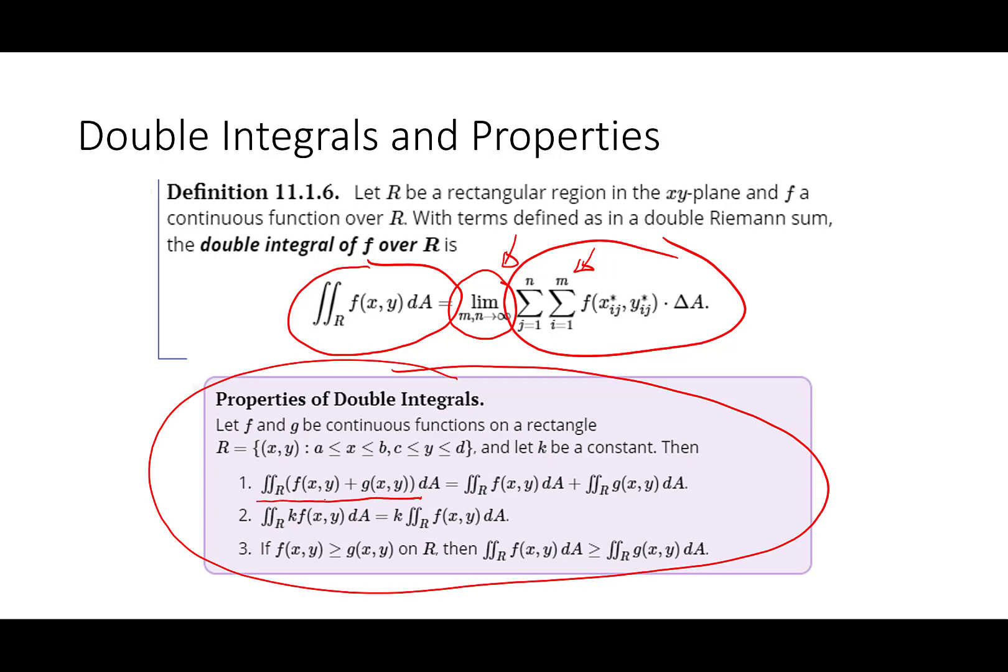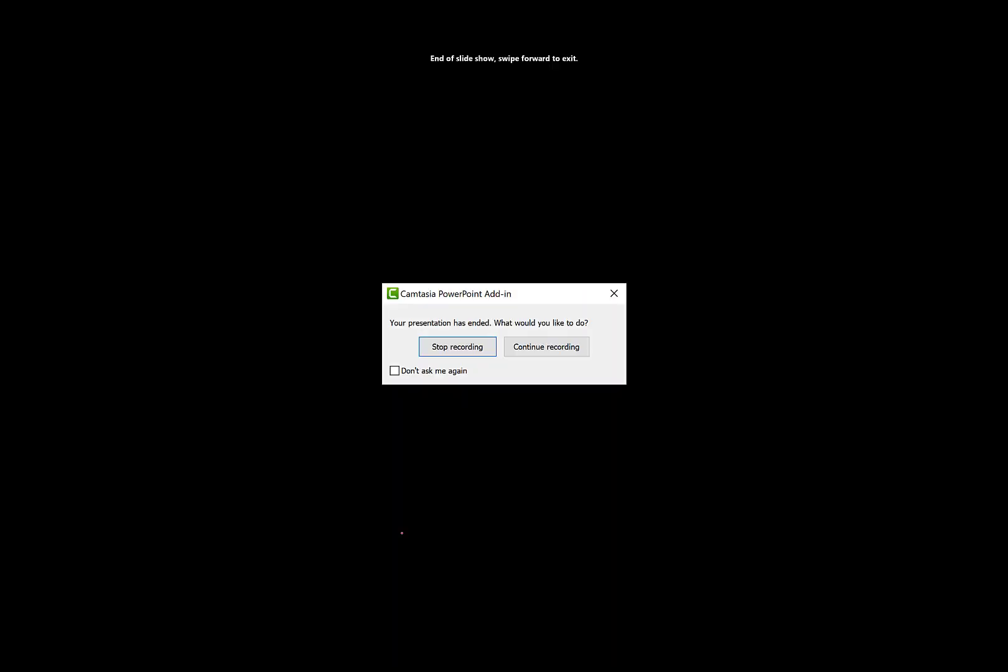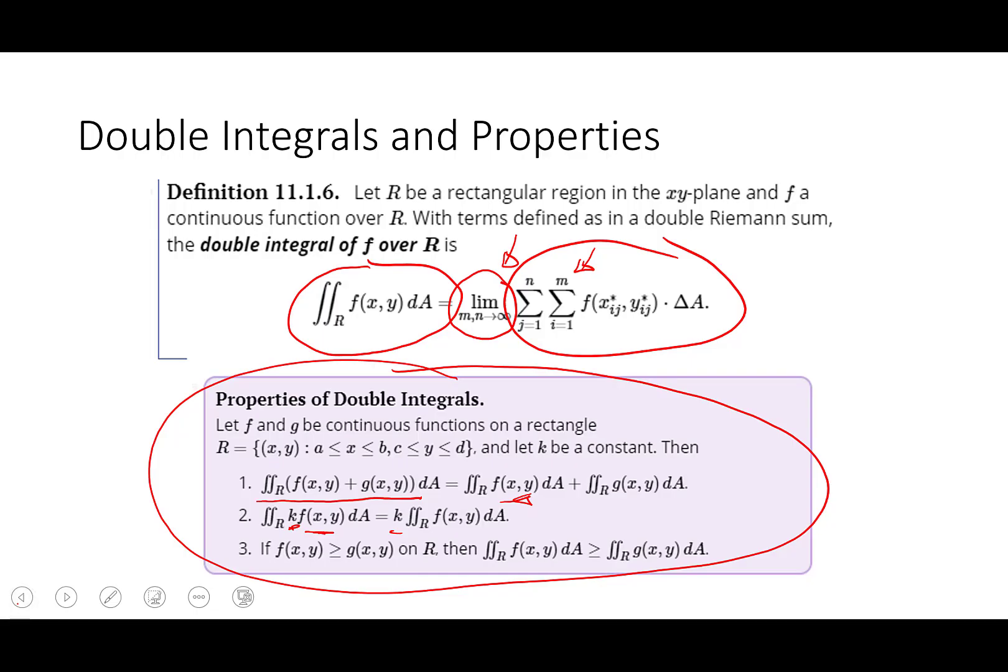Now, we do have the similar properties that we did back in calc 1. So if you take the double integral of the sum of two functions, you can distribute the integral over that sum. If you have a constant times a function, you can always pull that constant out. And if f is bigger than g, then the volume under f is going to be bigger than the volume under g. So, again, very similar to what we had back in calc 1.